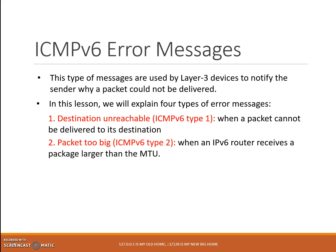Number two: Packet Too Big, ICMPv6 Type 2. IPv6 allows only the source of the packet to perform fragmentation. When an IPv6 router receives a packet larger than the Maximum Transmission Unit (MTU), the router drops the packet and sends an ICMPv6 Packet Too Big message back to the source.